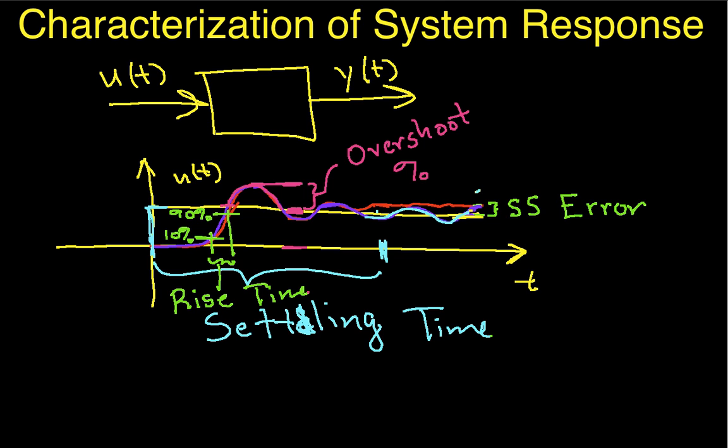And typically, making one of them better makes the others worse. It's not always the case, but usually you have trade-offs between making, say, the rise time very fast, and making the settling time very fast. It's hard to do both. So that concludes this video on the characterization of system responses.